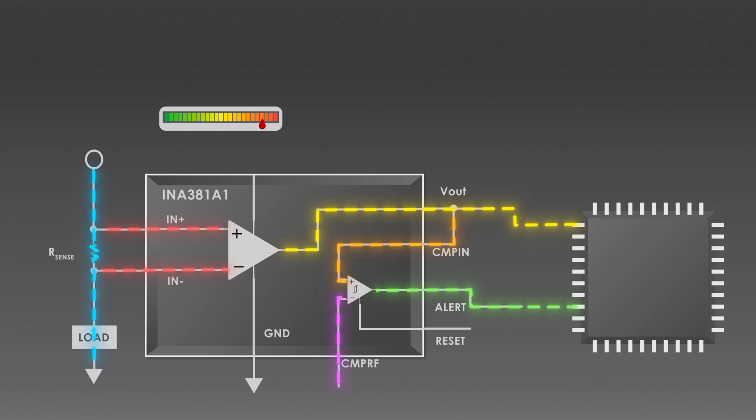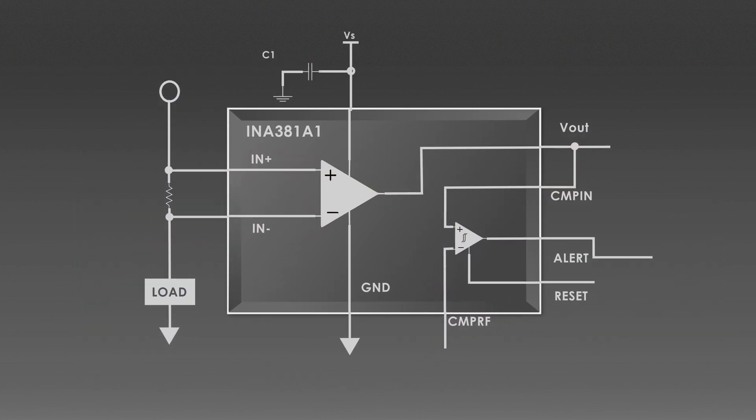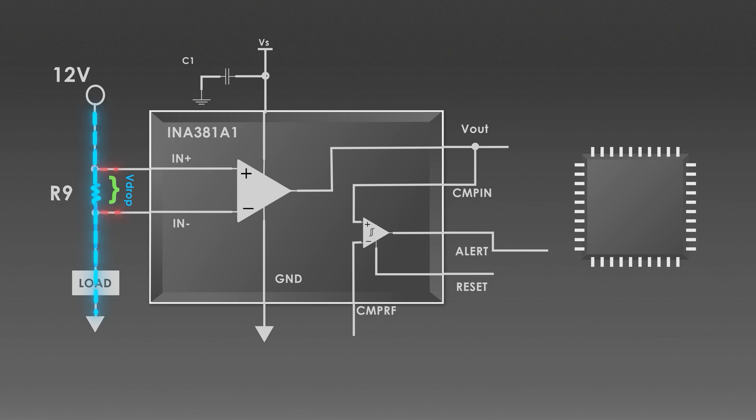This alert can be used to trigger a protection mechanism, such as shutting down a load or sending a warning signal. The load current flows through the shunt resistor R9, creating a small voltage drop across it. The voltage across R9 is proportional to the current flowing through it. The amplifier amplifies the voltage drop across R9 as per its selected gain.